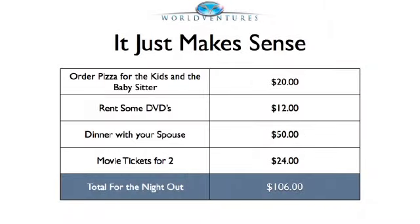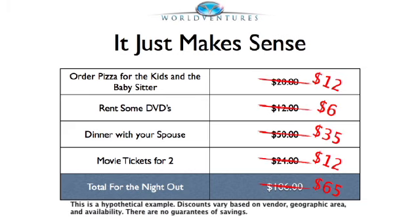Let's say you go on a date night with your spouse. So you get pizza for the kids and the sitter, you rent them some movies, you go out to dinner and a movie with your spouse, that's a $106 evening, but not as a DreamTrips Life member. Instead of $106, it's a $65 evening instead.